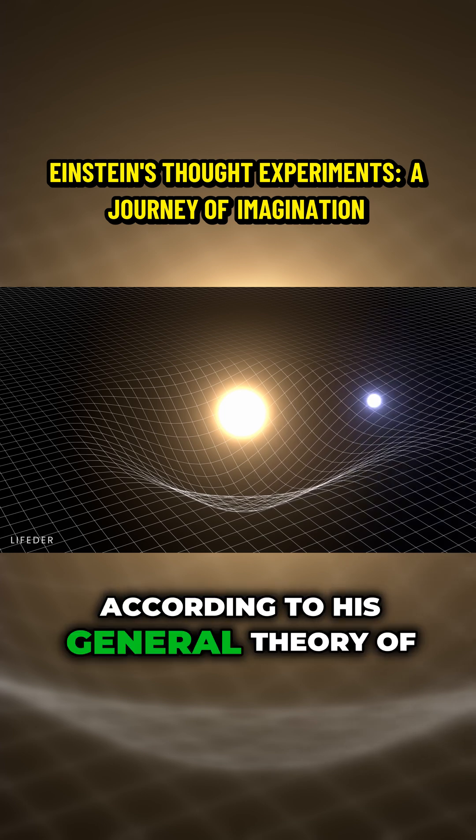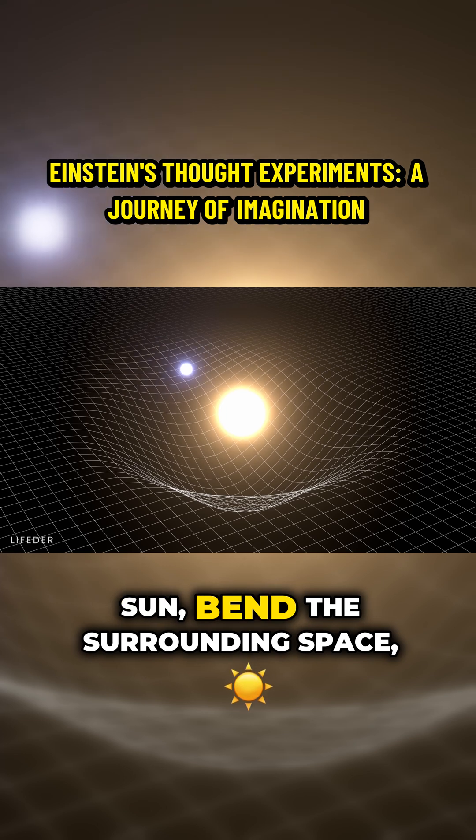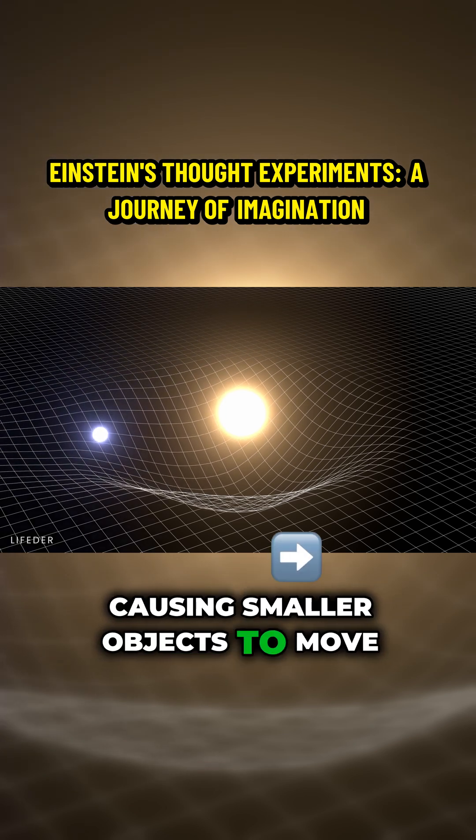According to his general theory of relativity, massive objects, like the sun, bend the surrounding space, causing smaller objects to move toward them.